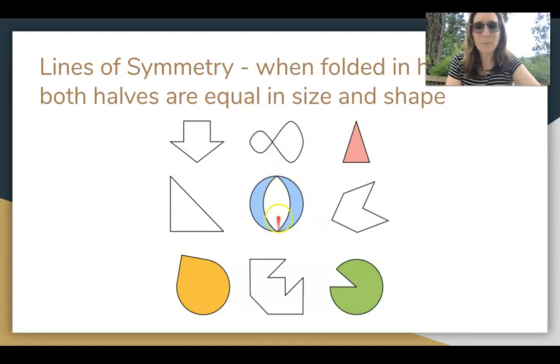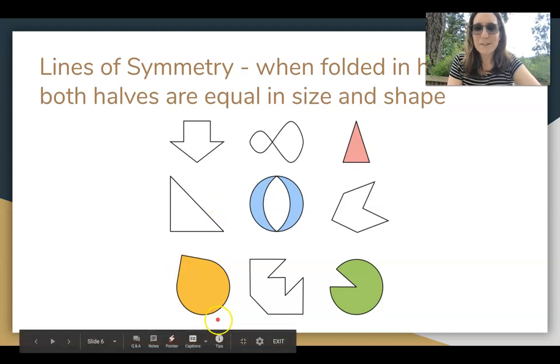This one right here. Wouldn't so much be this way, would it? Because it's a little bit more oval, so it's only going to be one line of symmetry. Here's this one, right here. There's one line of symmetry on this one. Line of symmetry here, and one line of symmetry.